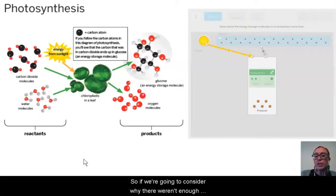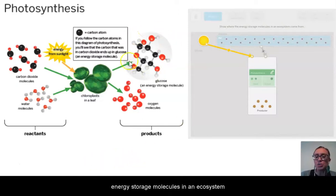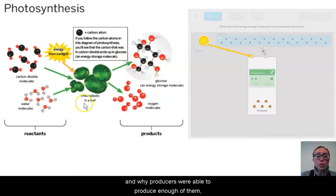If we're going to consider why there weren't enough energy storage molecules and why producers weren't able to produce enough of them, it makes sense to consider the inputs—the reactants of our photosynthesis chemical reaction. This makes sense to consider these reactants, these inputs into the photosynthesis process.